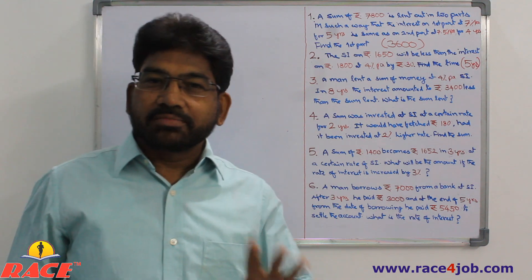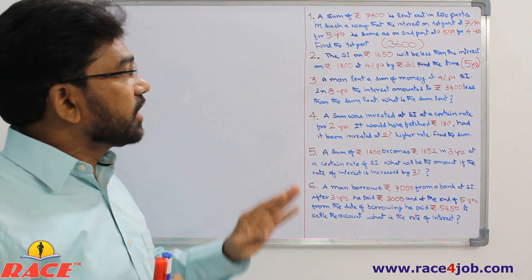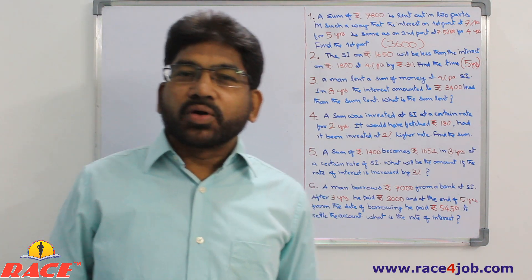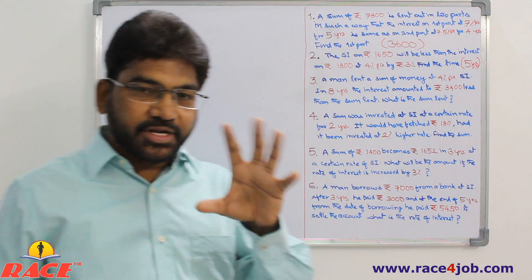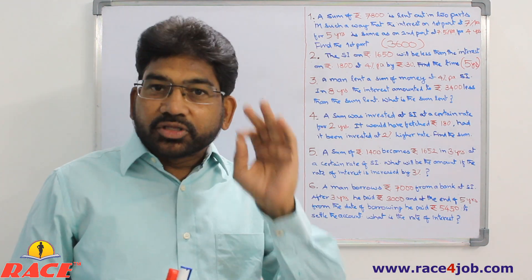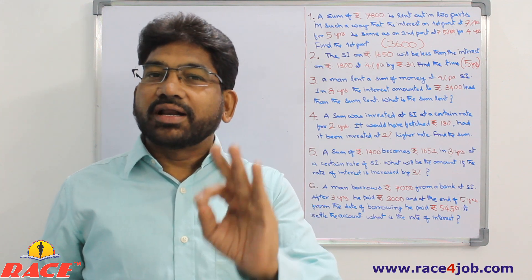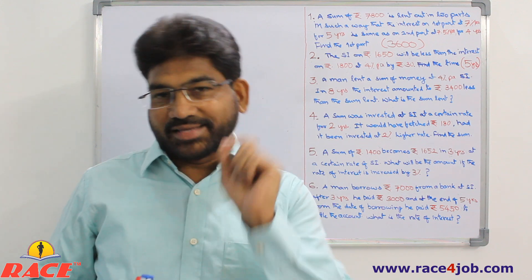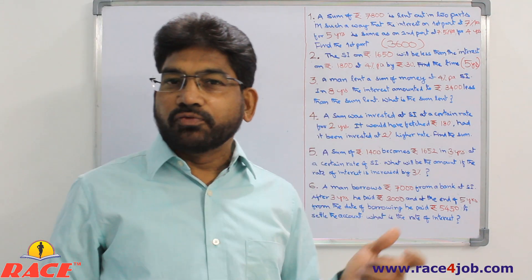Next question. A man lent a sum of money at 4% per annum simple interest for 8 years. The interest amounted to 3400 less than the sum lent. What is the sum lent? We need to find the principal. The principal was lent at 4% for 8 years, and the interest received is 3400 less than the principal. Conventionally, if the principal is x, then the interest is x minus 3400.